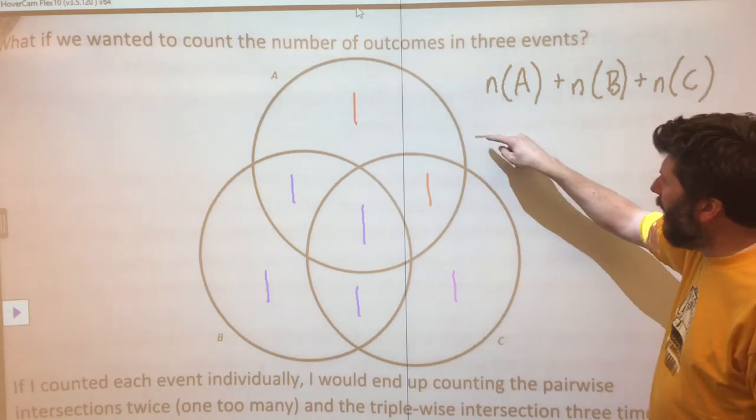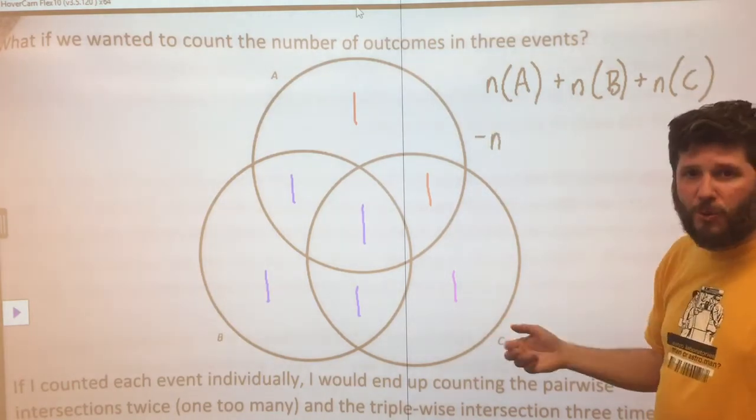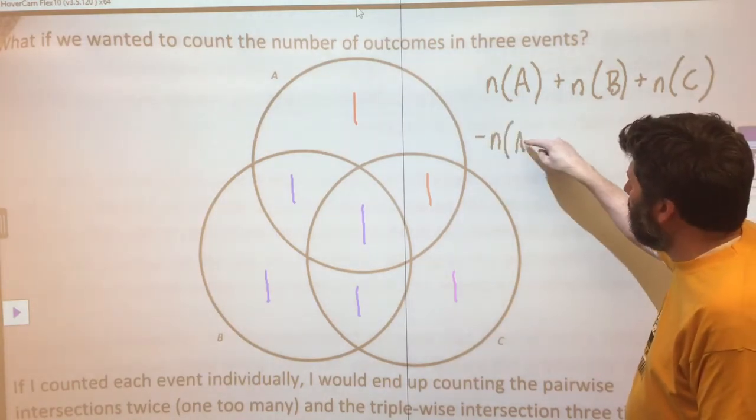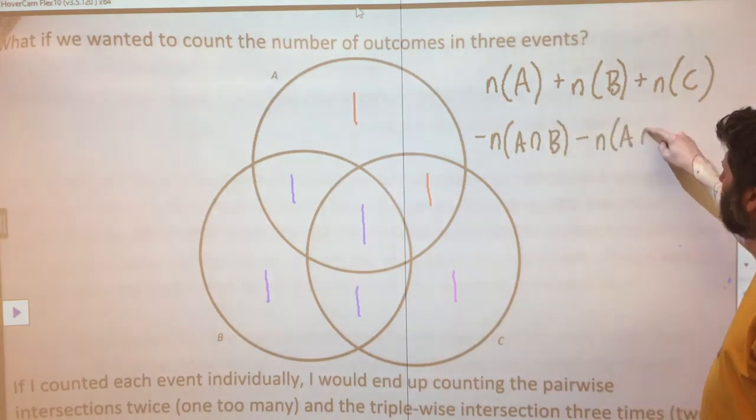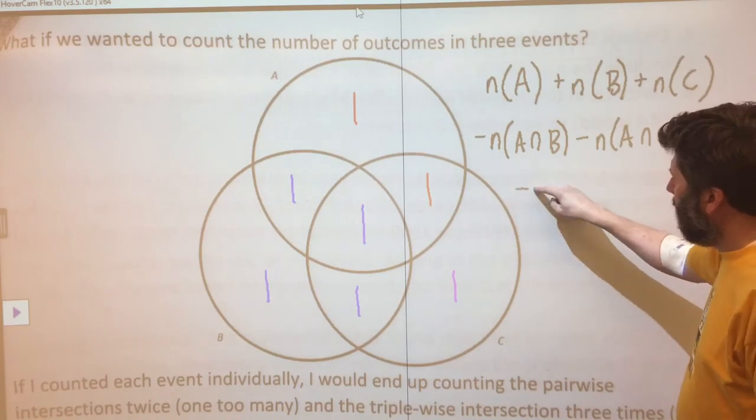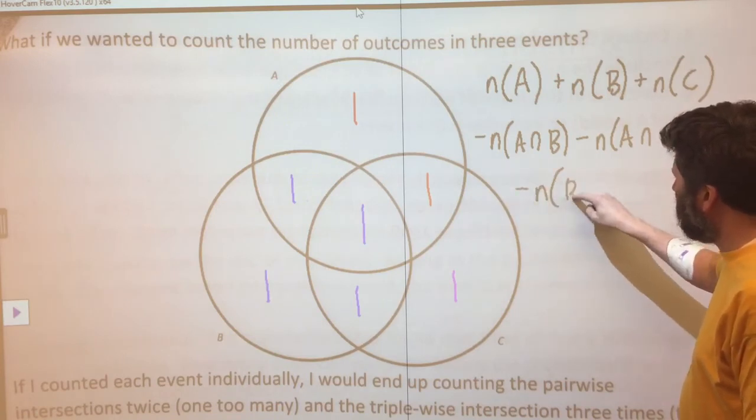But then I subtracted away all the two-way intersections once: A intersected with B, A intersected with C, and B intersected with C.